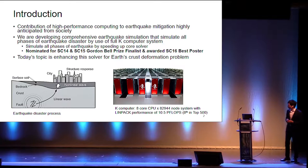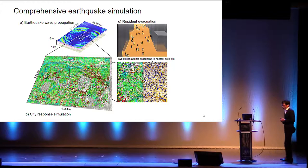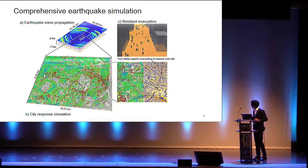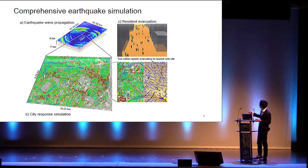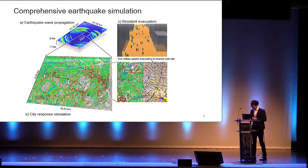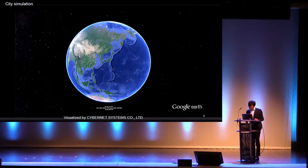Today's topic is enhancing this soft solver for earth crust deformation problem. Before I move on to our development in this study, I will give an overview of what we can do with our earthquake simulation up to this point. We compute the elastic wave propagation from fault to city, then compute the city response of ground and structures, and input into social simulation — that is resident evacuation simulation in Tokyo area.